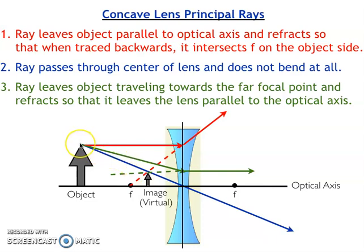So we draw three principal rays leaving the tip of our object. Those three rays, when traced backwards, intersect at the tip of our image.